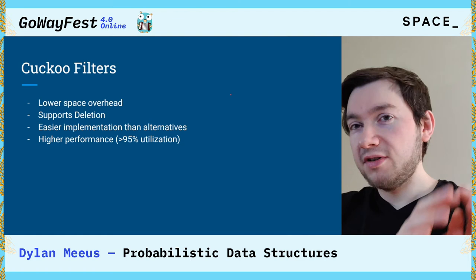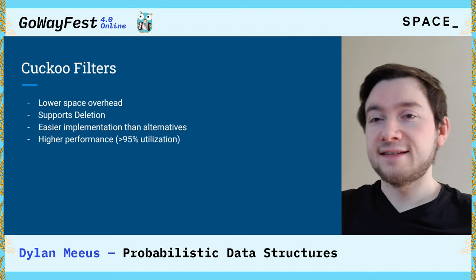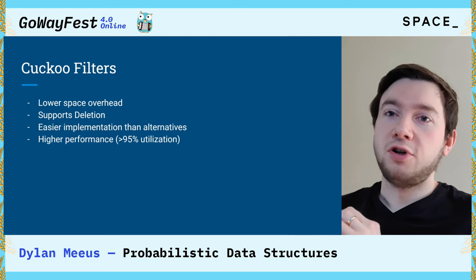That was it for the bloom filter. As you saw, you could probably implement this in about 50 lines of code — it's quite an approachable data structure. There are a few extensions on it, like counting bloom filters, but another one I want to highlight is the cuckoo filter.